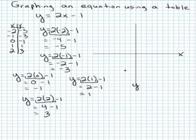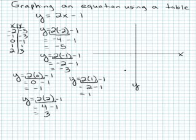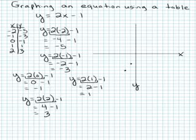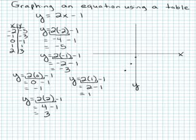For negative 1, negative 3, I start in the middle, go to the left 1 space, and down 3 for negative 3, and make a dot. For 0, negative 1, I stay right in the middle, then go down 1, and make a dot.